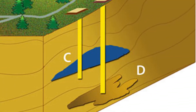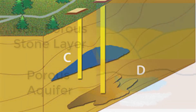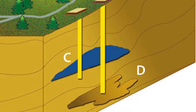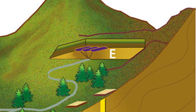C is aquifers — porous rock where you can pump gas down. The gas seeps through the porous rock and there's a layer of non-porous rock on top which prevents it leaking up to the surface. Letter D is a depleted reservoir, where oil has been pumped out of the ground in the past, leaving an empty space that is perfect for storing gas. Finally, letter E is a hard rock cavern — empty spaces within non-porous hard rock where we can pump gas up to high pressures.